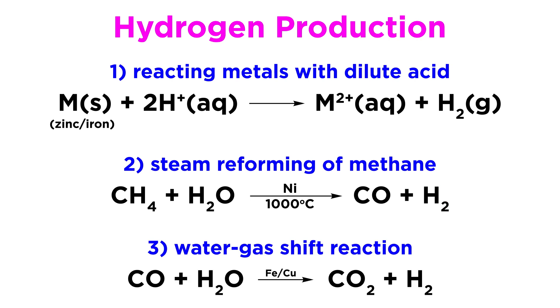Finally, there is the water-gas shift reaction, where carbon monoxide and water react over iron and copper catalysts to produce carbon dioxide and hydrogen gas. We will learn more about this type of transition metal catalysis later in the series.